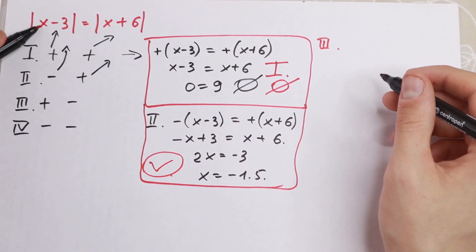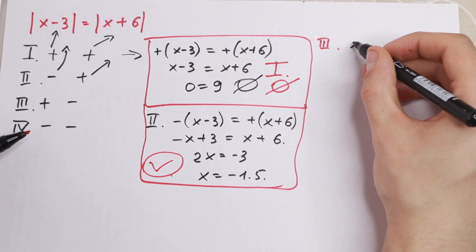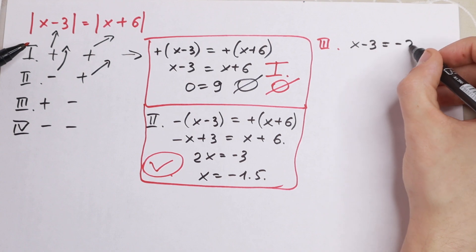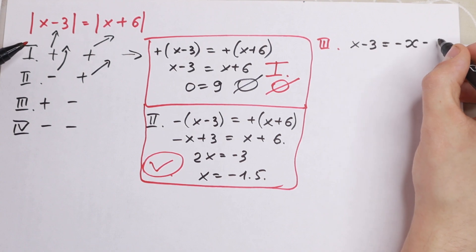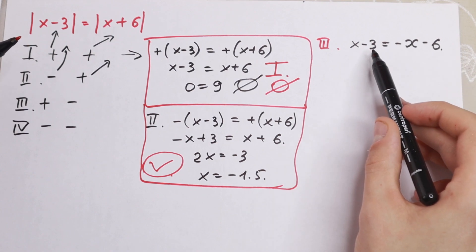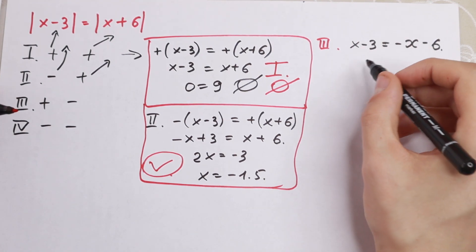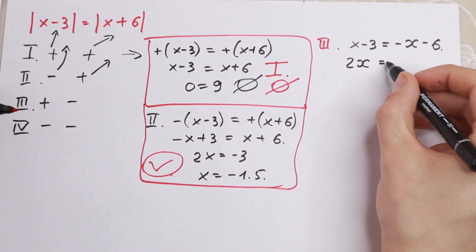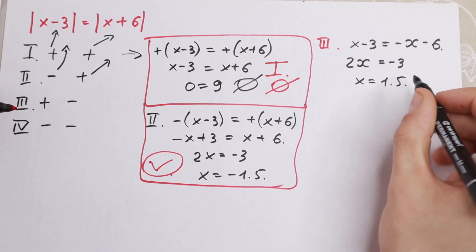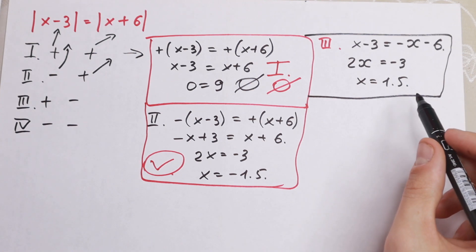Now the third case: the first term is plus and the second is minus. We will have x minus 3 equal to minus x minus 6. Bringing x terms together, we get 2x equal to minus 3, so x equal to 1.5. As you can see, the third case gives us the same root, which is good for us.